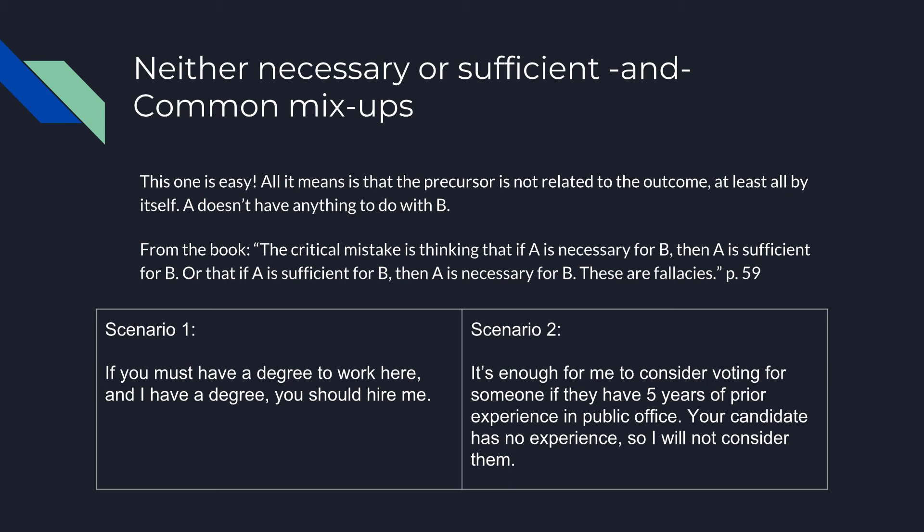In the very last case, if a condition is neither necessary nor sufficient, this is the easiest one — it just doesn't have any relationship to the outcome whatsoever. A doesn't cause B at all. A might happen, but it has absolutely nothing to do with B.